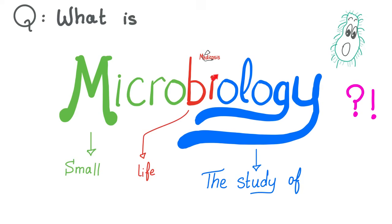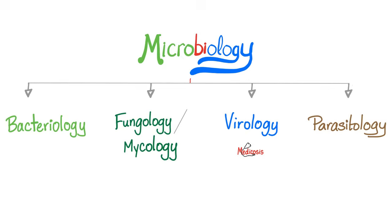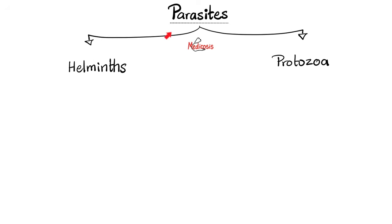What is microbiology? 'Ology' means the study of, 'bio' means life, 'micro' means small. So microbiology is the study of small life. Microbes are divided into bacteria, fungi, viruses, and parasites — but be careful because some parasites are big, i.e. macroscopic and not microscopic. So the science of microbiology is divided into bacteriology, mycology to study fungi, virology to study viruses, and parasitology for parasites. Parasites come in many shapes and forms, including helminths and protozoa.